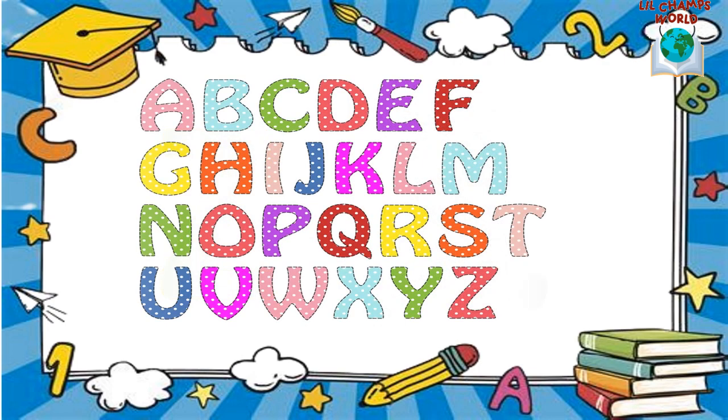Now let's revise. A, B, C, D, E, F, G, H, I, J, K, L, M, N, O, P, Q, R, S, T, U, V, W, X, Y, and Z. Now I know my ABC. Next time won't you sing with me.